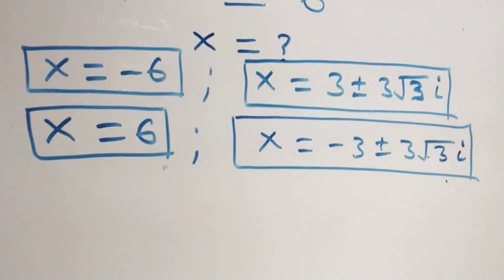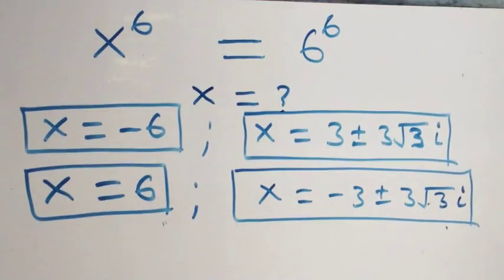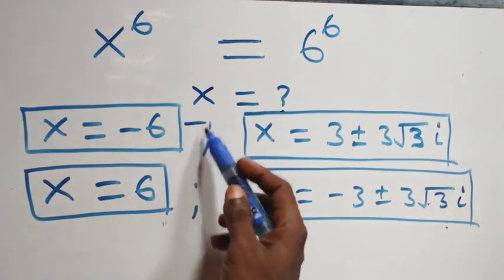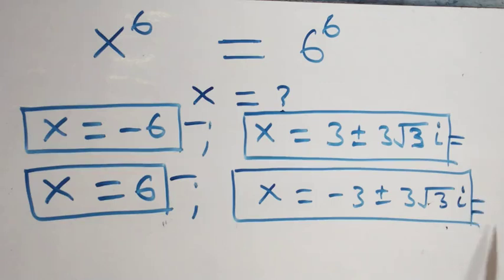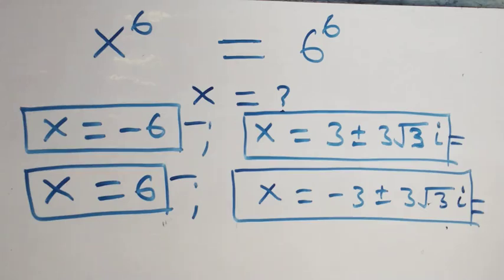Altogether, this problem has six solutions: two real solutions (x = -6 and x = 6) and four complex solutions (x = 3 ± 3√3 i and x = -3 ± 3√3 i). Thank you for watching — please subscribe for more videos, turn on notifications, share this video, give a thumbs up, and leave your comments. See you next class, bye for now!